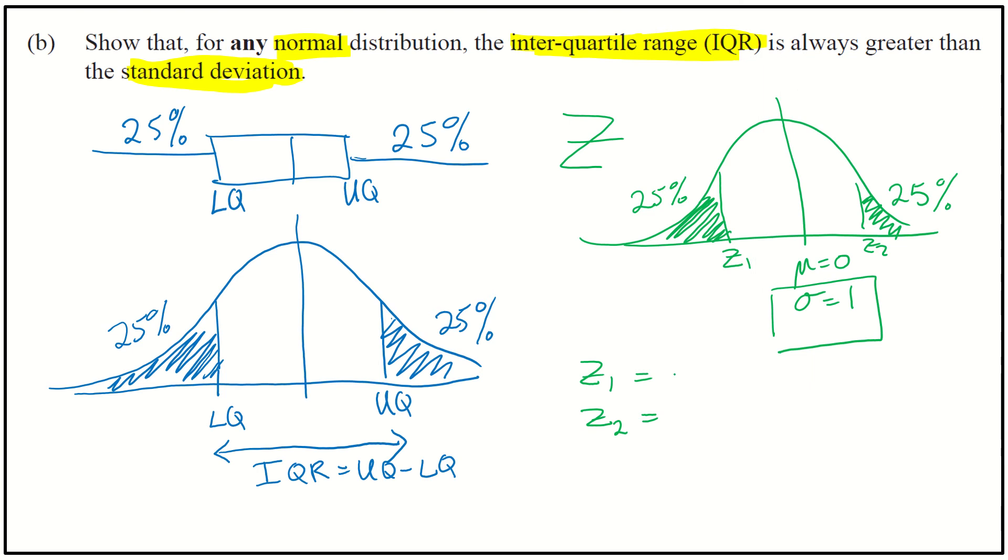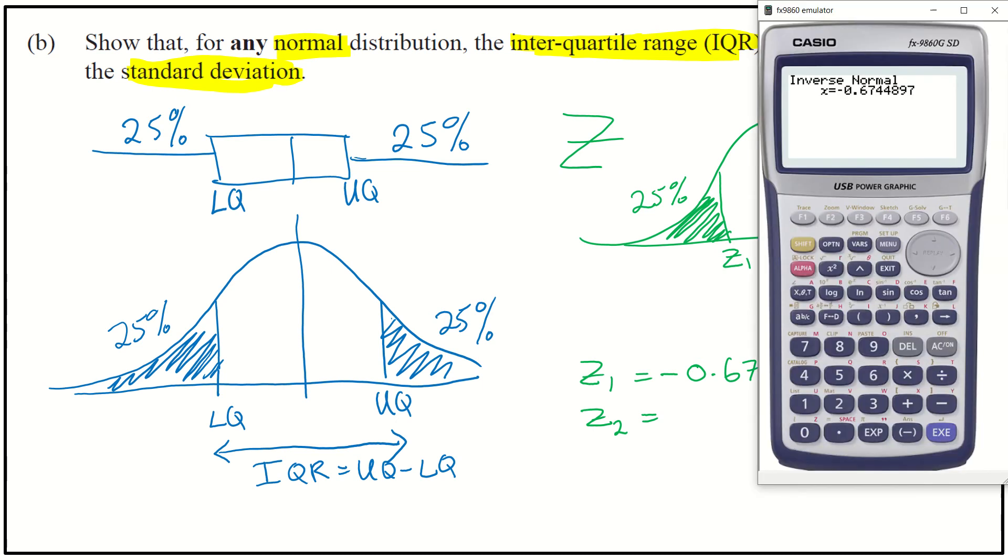Okay. So negative 0.6745. So that is my Z1 value. Now, let's go and find the Z2 value. So if I now change that to the right tail, F2, then that will give me positive 0.6745.